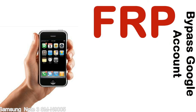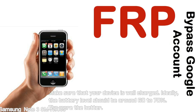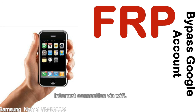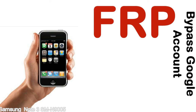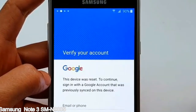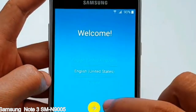Before starting: 1 — make sure that your device is well charged. Ideally, the battery level should be around 60 to 70% — the more the better. 2 — internet connection via WiFi. Here is a step-by-step guide on how to bypass Google account on your Samsung Galaxy device.